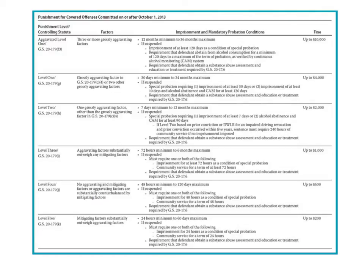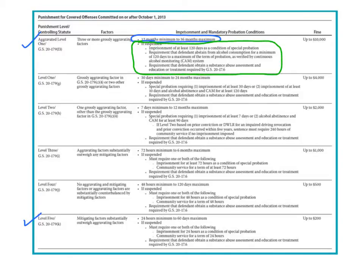If you're watching this video, you probably already know that DWI in North Carolina is not sentenced under structured sentencing. Instead, it has its own rules, set out in Chapter 20, and they're summarized on this chart prepared by my colleague Shea Denning. For each level of DWI, from the most serious — aggravated level one — down to the least serious, level five, the judge has two options at sentencing: an active sentence or a suspended sentence with probation. This video is about active sentences for DWI.